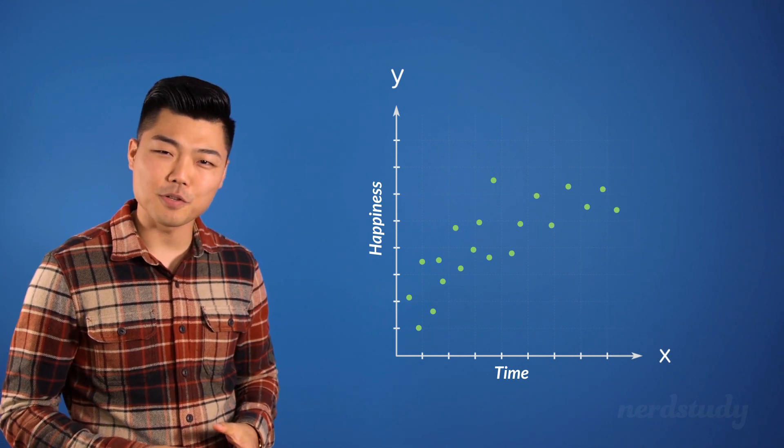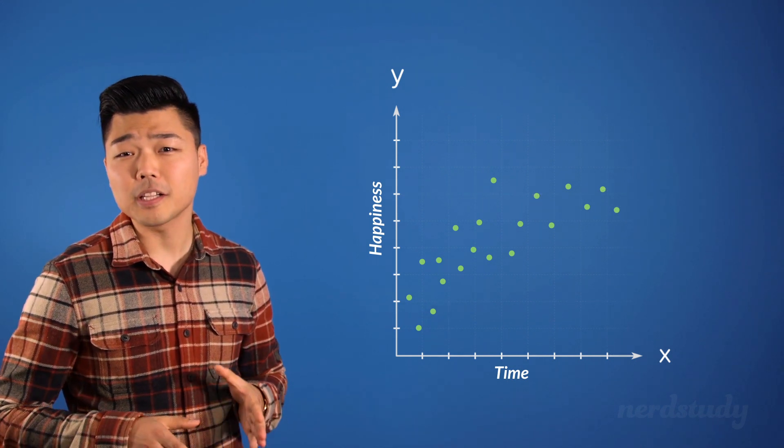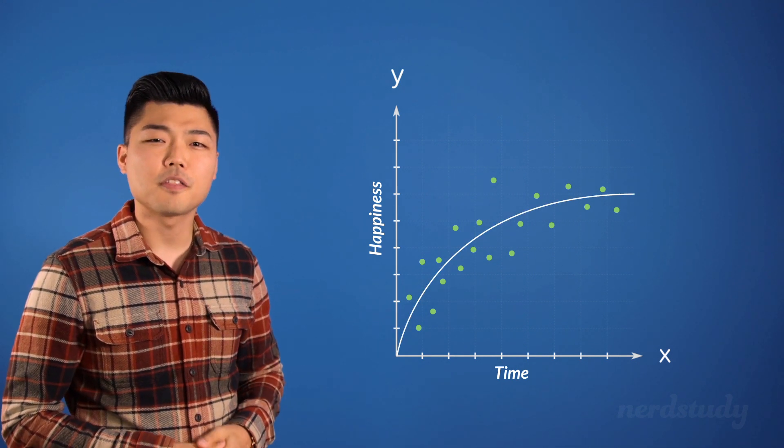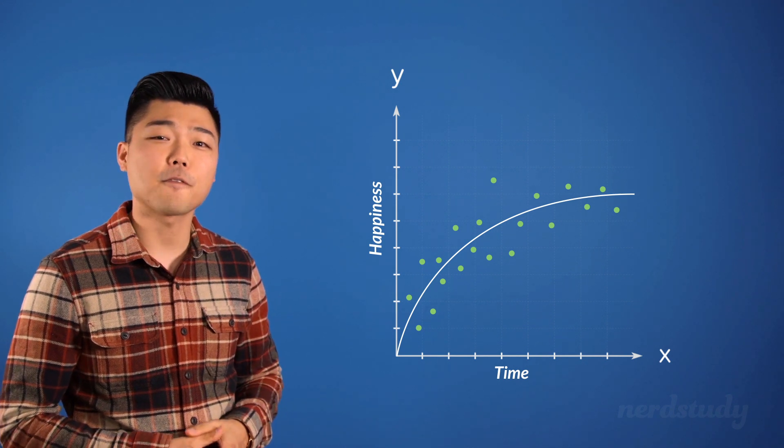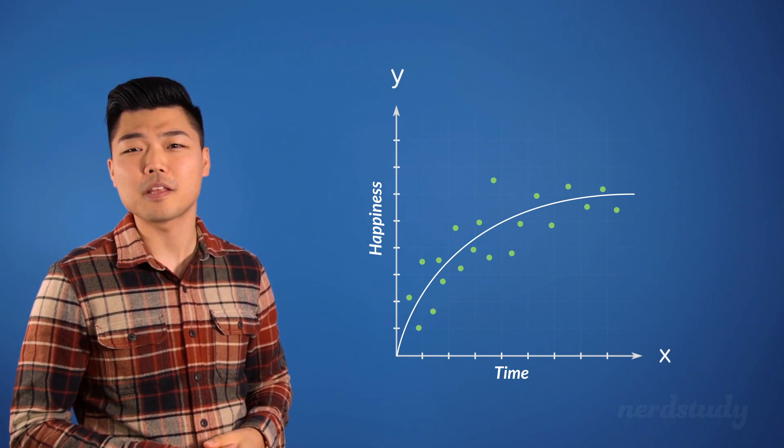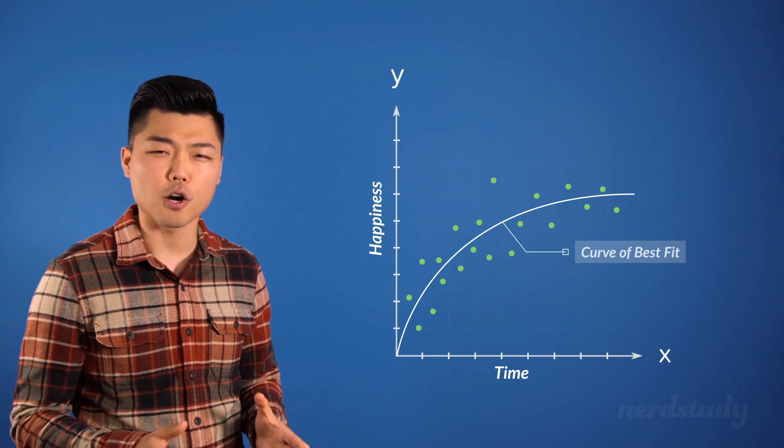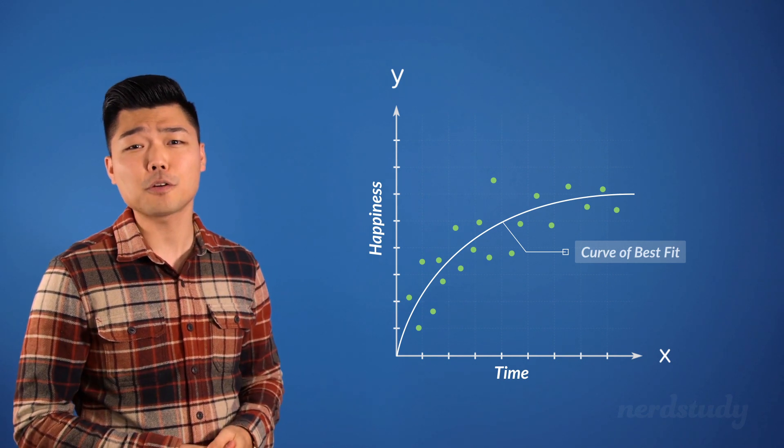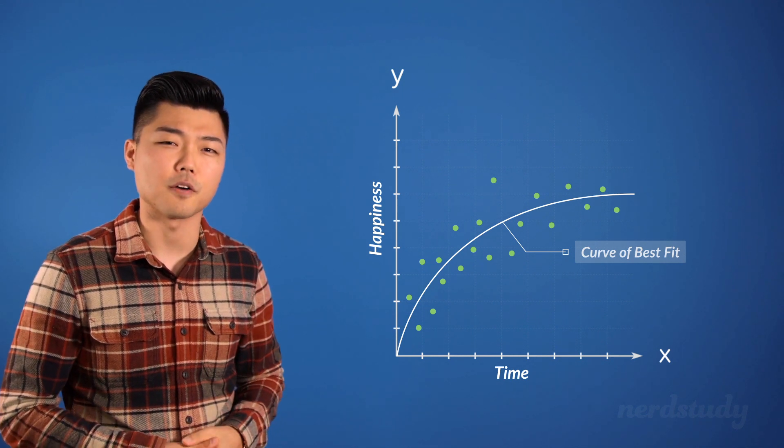In this situation the graph seems to clearly have some sort of curve that would best represent the data. Thus our line of best fit would be better described in this case as a curve of best fit which in essence suggests that the general data itself has a trend that curves.